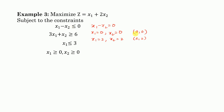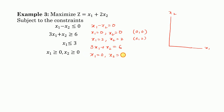For the second line, 3x1 + x2 = 6: if x1 = 0, we get x2 = 6, giving point (0, 6). If x2 = 0, we get x1 = 2, giving point (2, 0). So this line passes through (0, 6) and (2, 0).